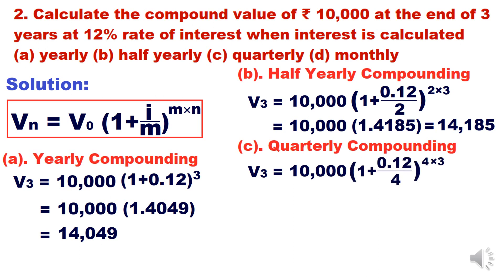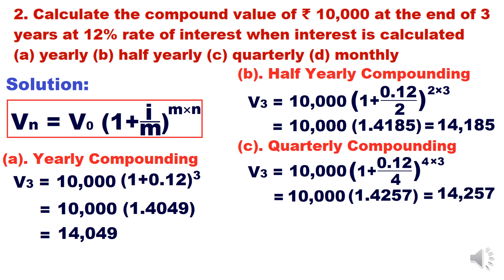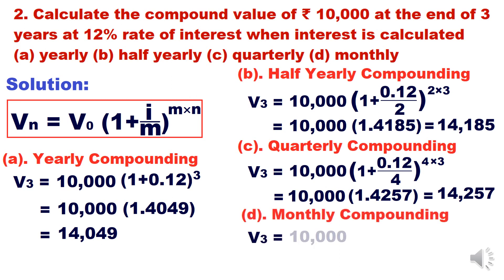For quarterly compounding: V3 = 10,000 × (1 + 0.12/4)^(4×3). The denominator is 4 because quarterly means every three months — four times per year. Simplifying, the factor is 1.4257, giving ₹14,257.